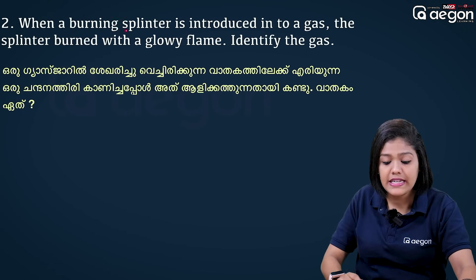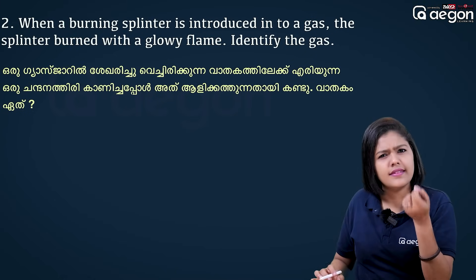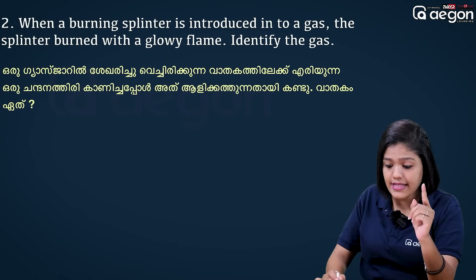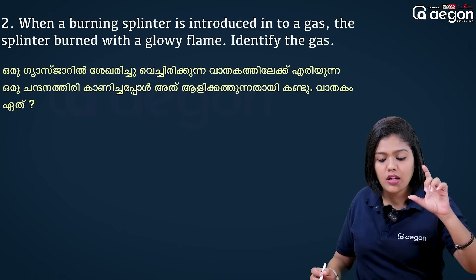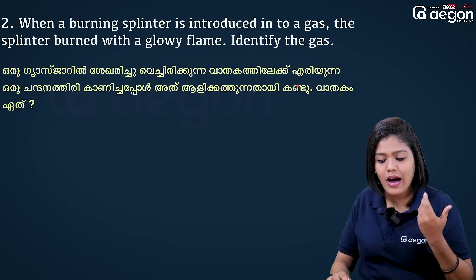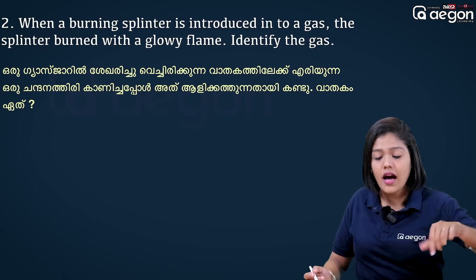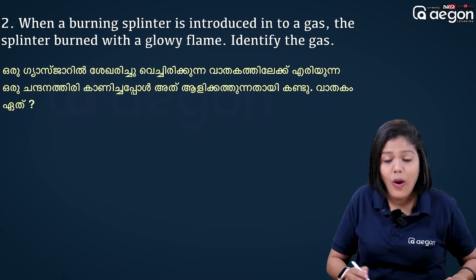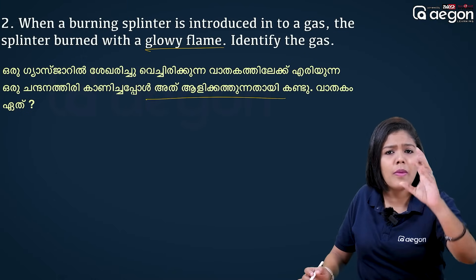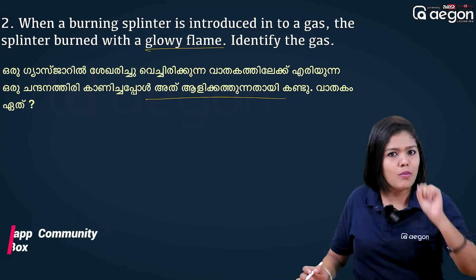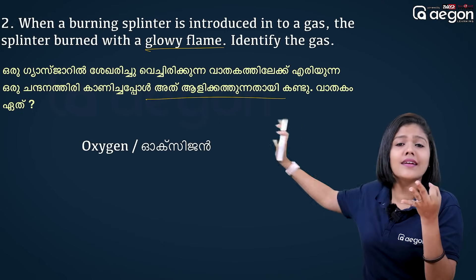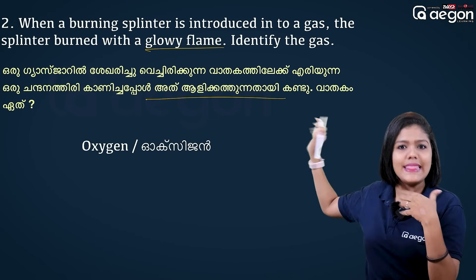When a burning splinter is introduced into a gas and the splinter burns with a glowing flame, identify the gas. The three gases used for identification are oxygen, hydrogen, and carbon dioxide. This is how you identify oxygen — a glowing splinter relights in oxygen.